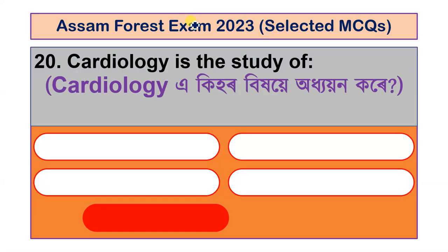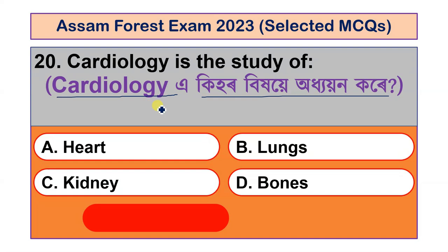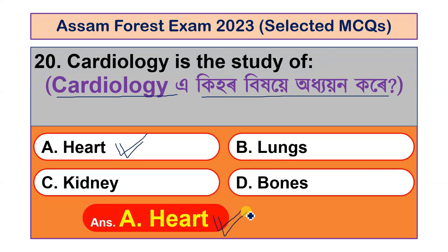Today's final question: Cardiology is the study of what? What does the field of cardiology study? Options are heart, lungs, kidney and bones. The correct answer is heart. Cardiology is the branch of science that studies the heart.